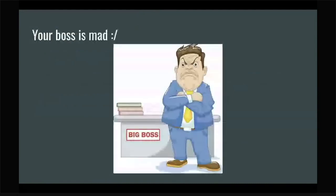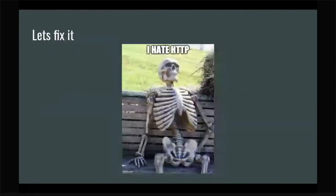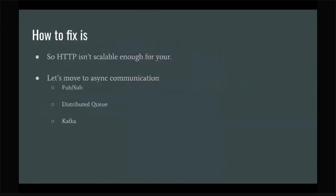Probably your boss is going to be mad, and he might be right, because we could have predicted that — if something is not available, we're going to have data loss. You decide you just hate HTTP. It's not working well enough. We need to figure out a way to fix it. We don't want HTTP because it's synchronous. We want to move to something where, if one component isn't available or has a serious bug, the application stays as operational as possible — and more importantly, we wouldn't lose any data.